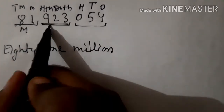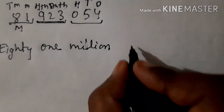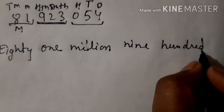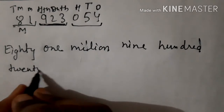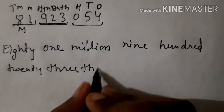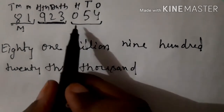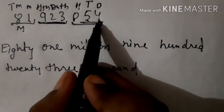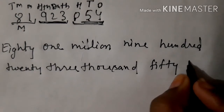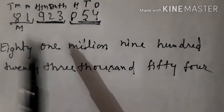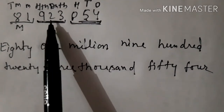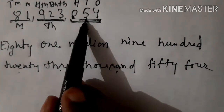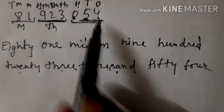Next is the Thousands period: nine hundred twenty-three thousand. Then for the Ones period — zero is skipped। अब हमारा यह 10s place पर है तो fifty-four। So the complete number name is: two hundred eighty-one million, nine hundred twenty-three thousand, fifty-four.